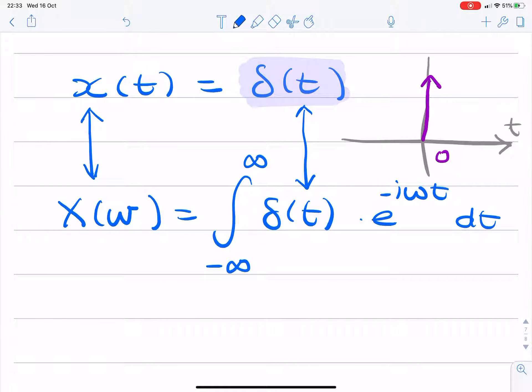Now remember the sifting property of the delta Dirac function. When we have an integral of a unit impulse multiplied by any function, we simply find the value of t for which the unit impulse is not equal to 0, so that's at t equals 0, and substitute that instead of the independent variable t.